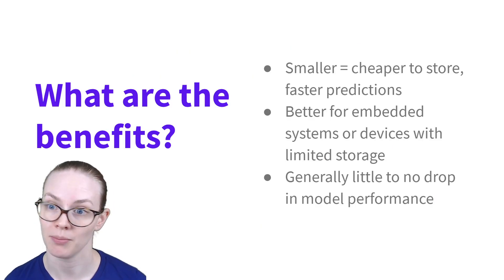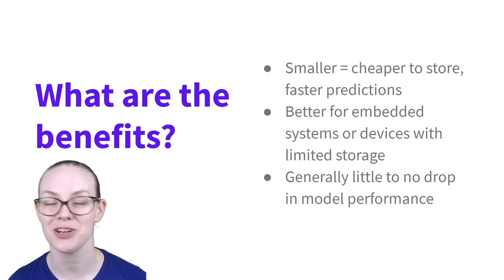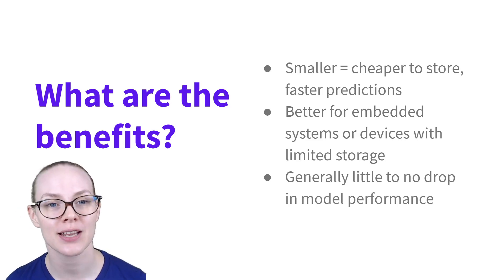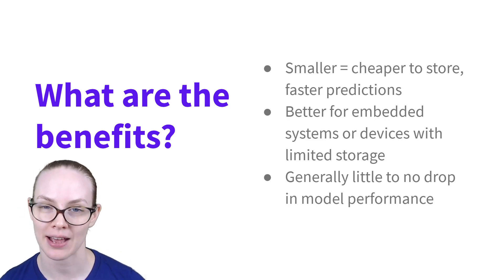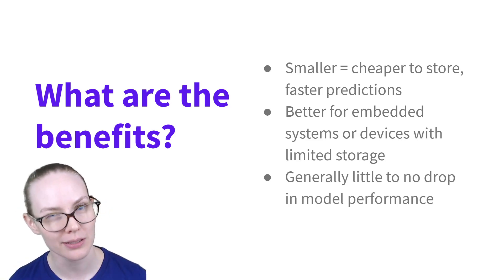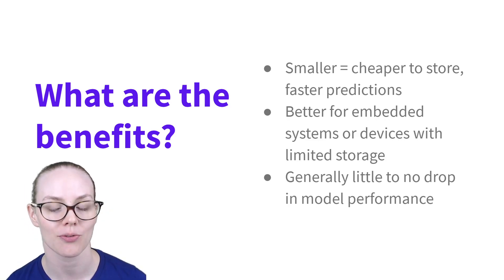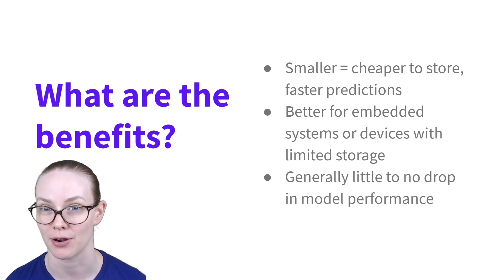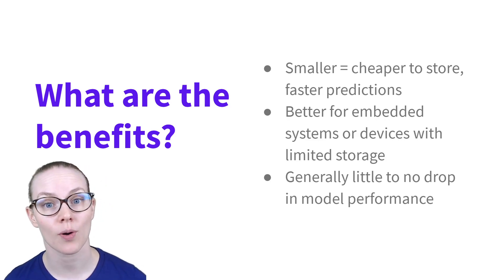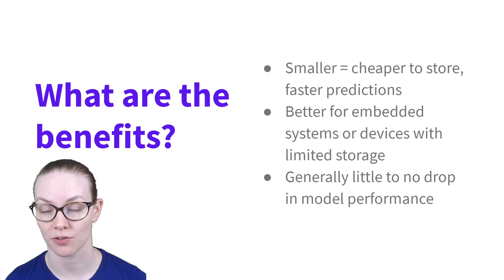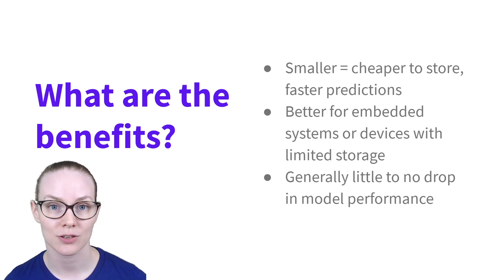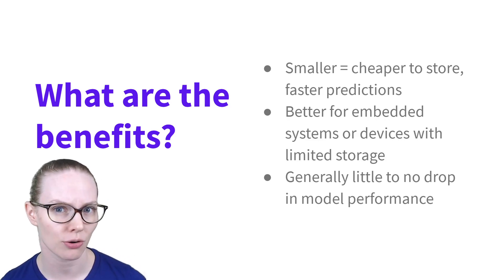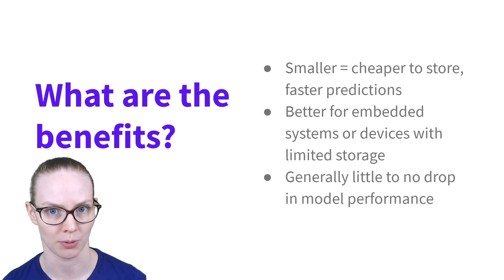What are the benefits of smaller models? A big one is that they are cheaper to store — since compute is money — and they also tend to make faster predictions. The full BERT model can be a little bit slow to run, so a smaller version will probably be better for most applications. They're also better for embedded systems or devices with limited storage, and when done well, most of these approaches result in little to no drop in model performance.